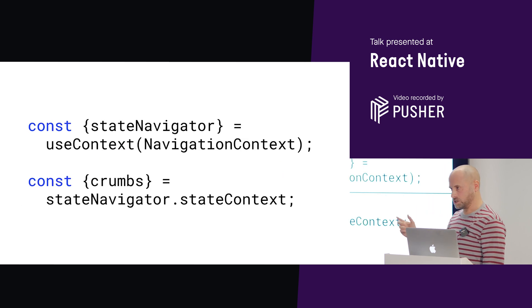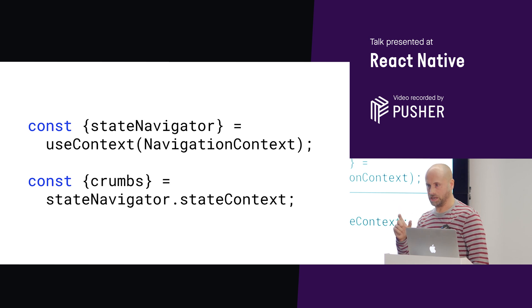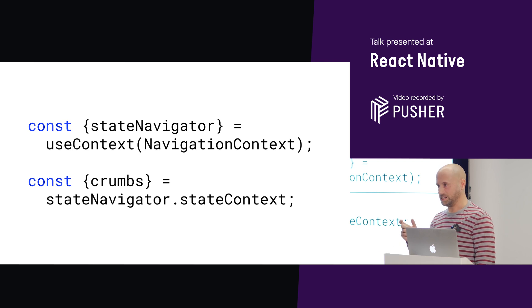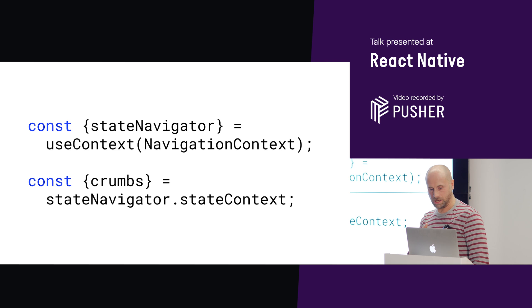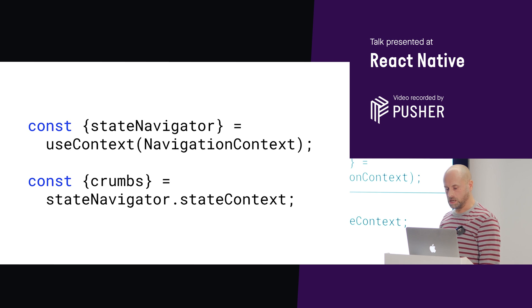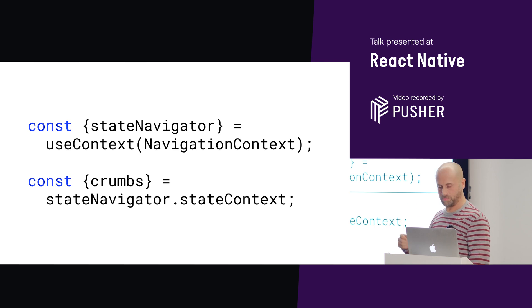We can access this crumbs array at any time from within any of our scenes by getting it from the React context. We get the state navigator from React context just like we did when navigating, and then the crumbs array is a property hanging off the stateContext property of that.